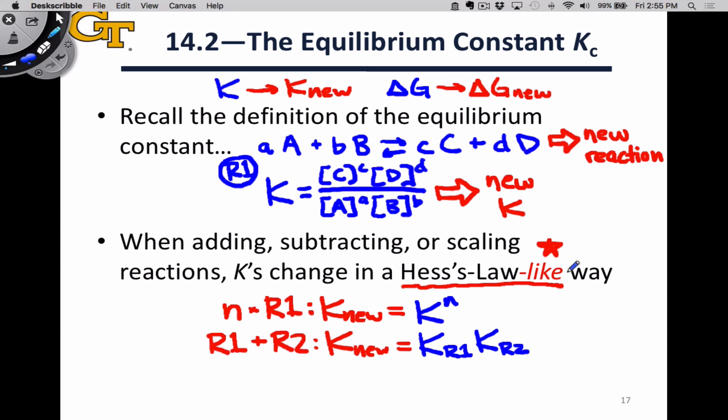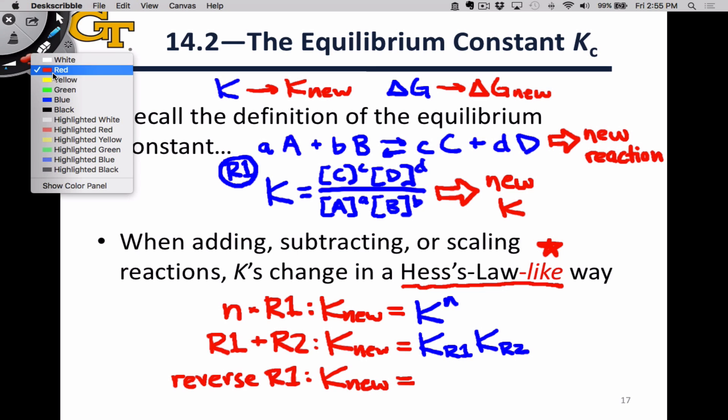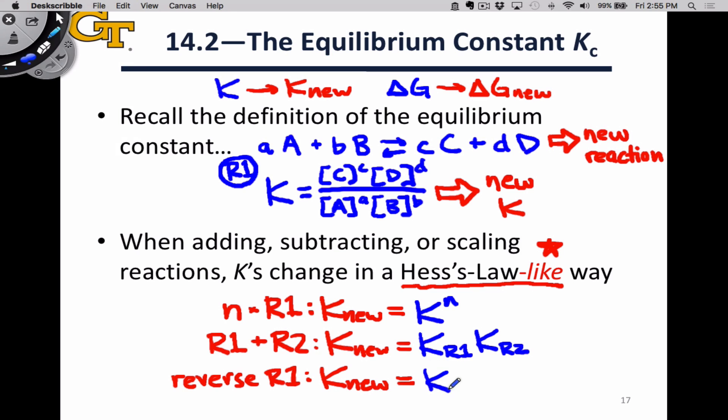If I take R1 and I reverse it, in other words, if I make the products of this reaction the reactants and the reactants the products, if I just kind of flip the definitions there, then the new equilibrium constant is equal to the reciprocal or the inverse of the original equilibrium constant.